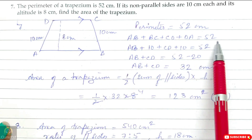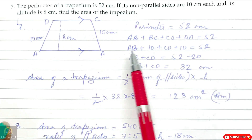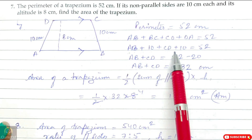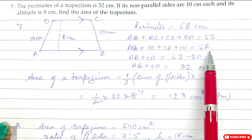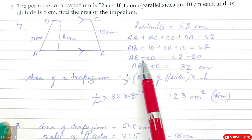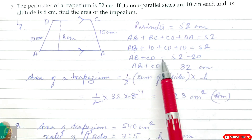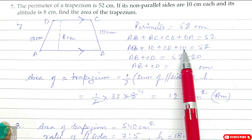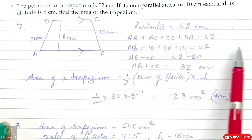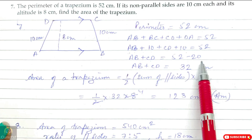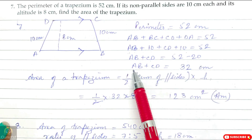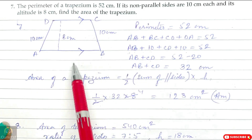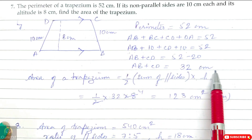Perimeter: AB + BC + CD + DA = 52. AB is unknown, so AB + 10 + CD + 10 = 52. Therefore AB + CD = 52 minus 20 = 32 cm. So the sum of both parallel sides is 32 cm.